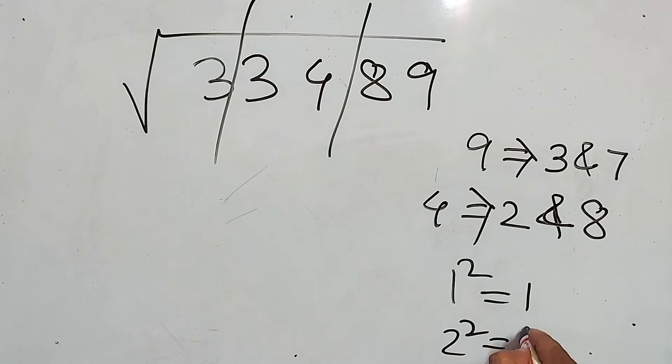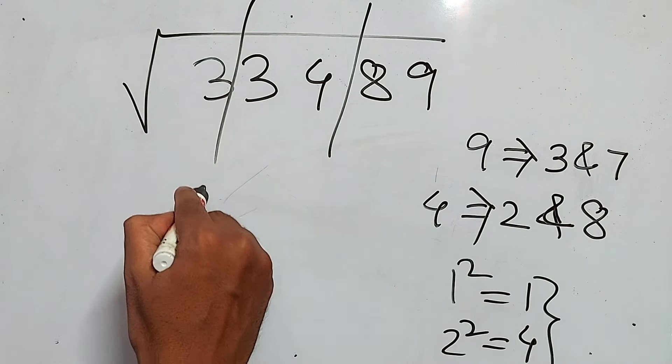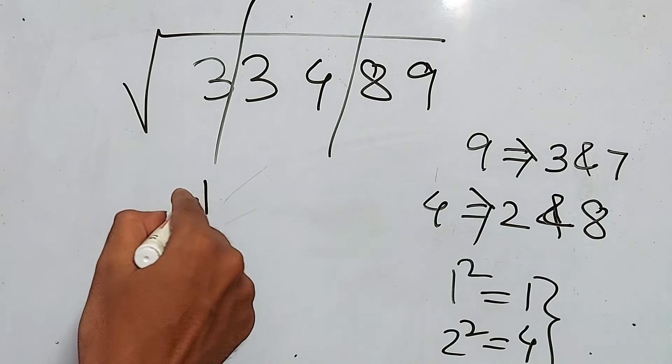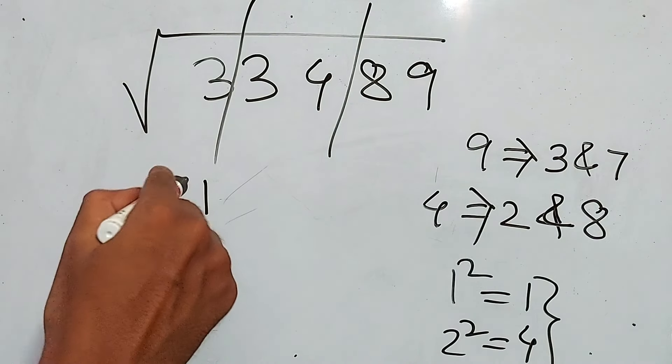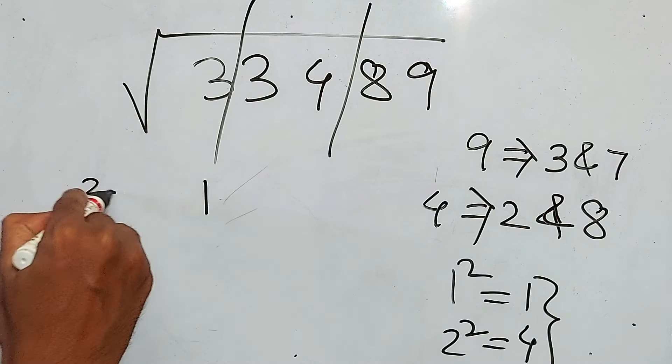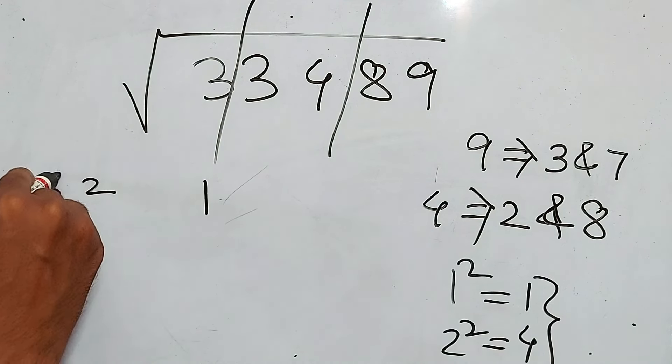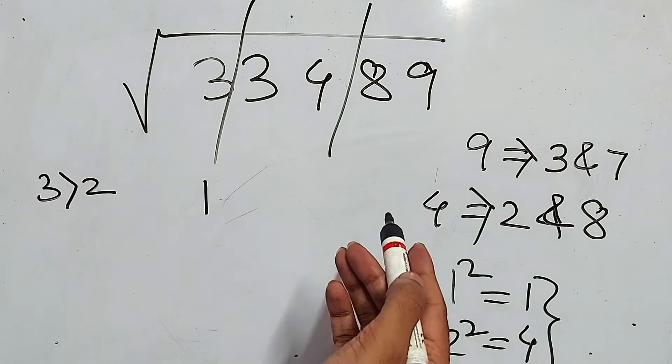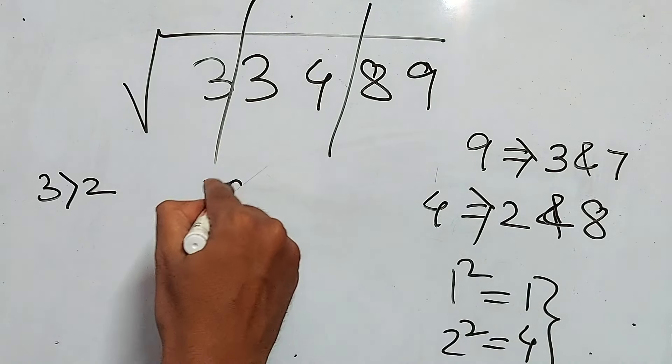Now, we know 3 is in between these two. Always take the smaller one. So we have to take 1. Now, again, we have to multiply with the next number. That is 1 × 2, which is 2. But 3 is greater than 2. So greater number, that is 8. So 18.